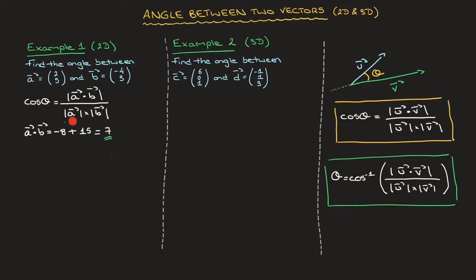Next, we calculate the magnitude of a. The magnitude of a is equal to the square root of 2 squared plus 5 squared, which is the square root of 4 plus 25. The magnitude of a is equal to the square root of 29.